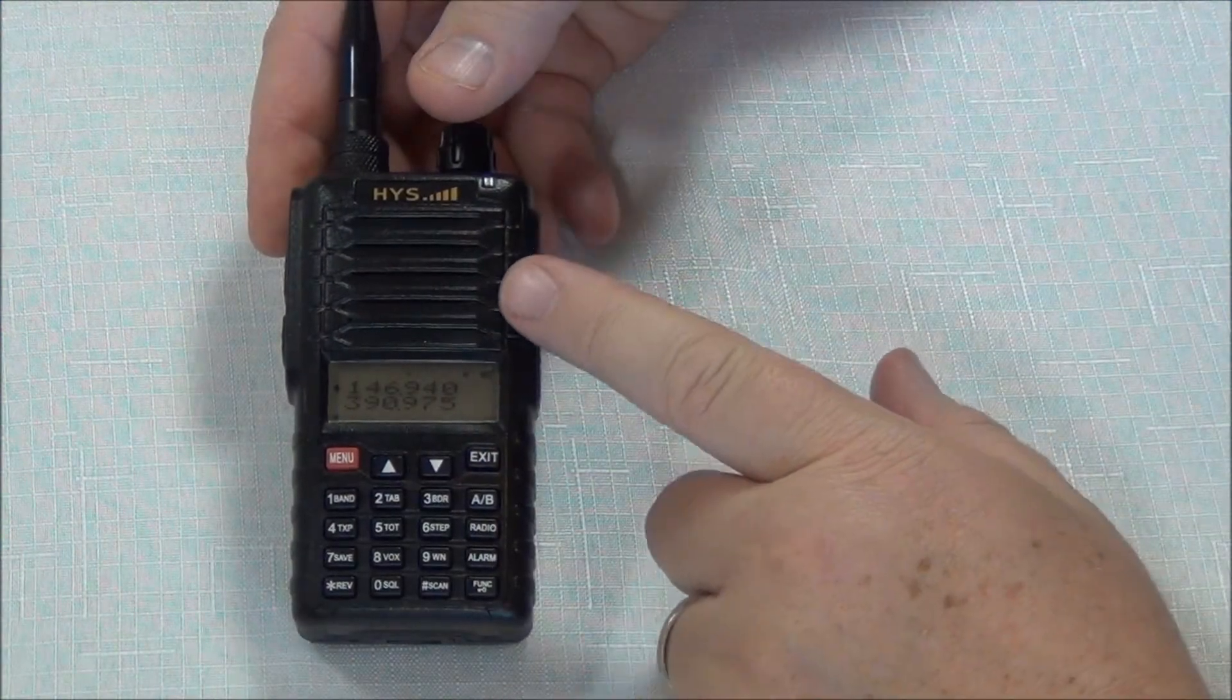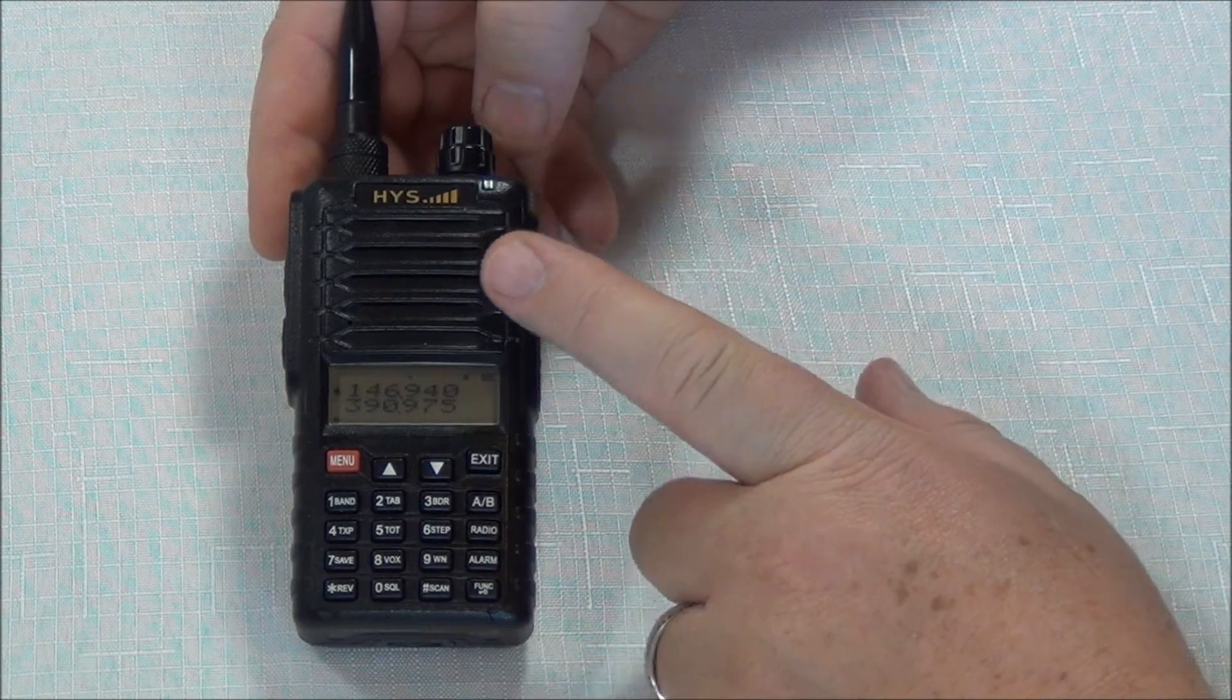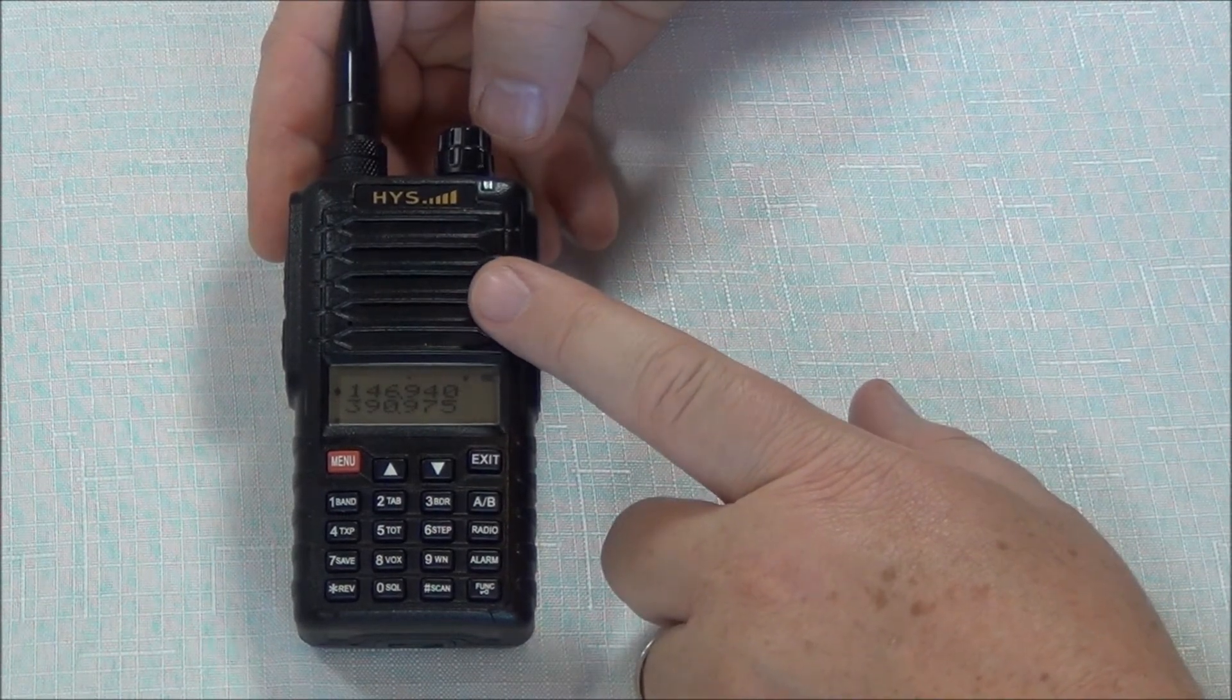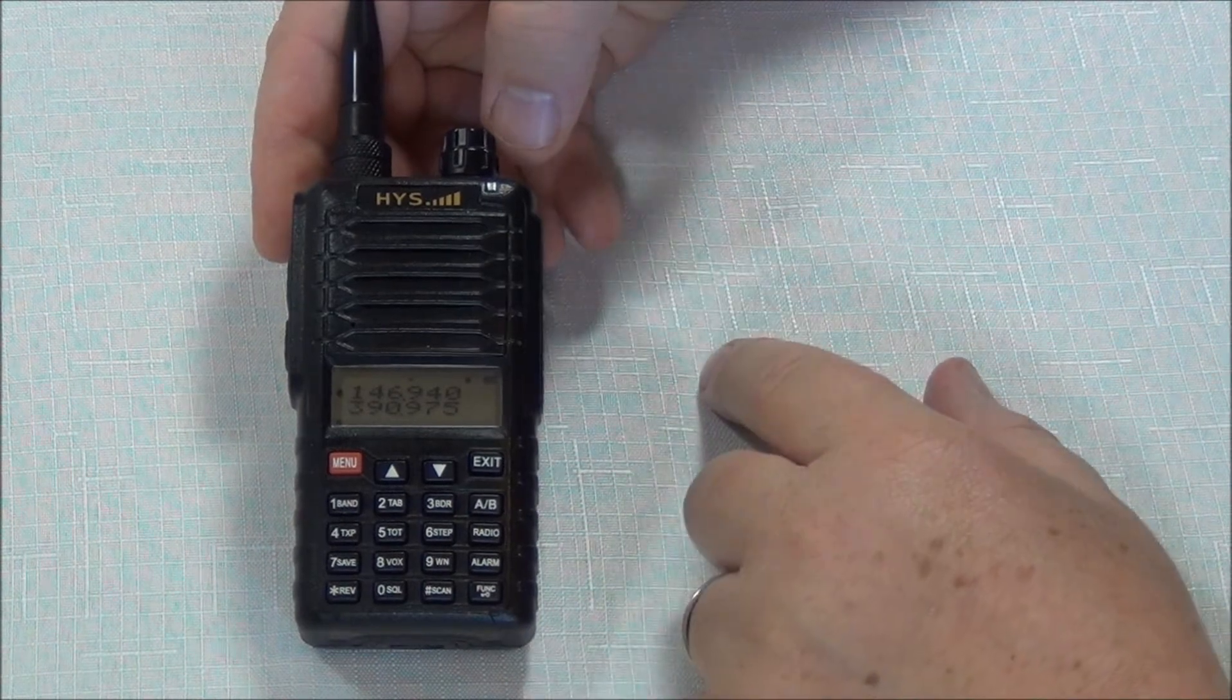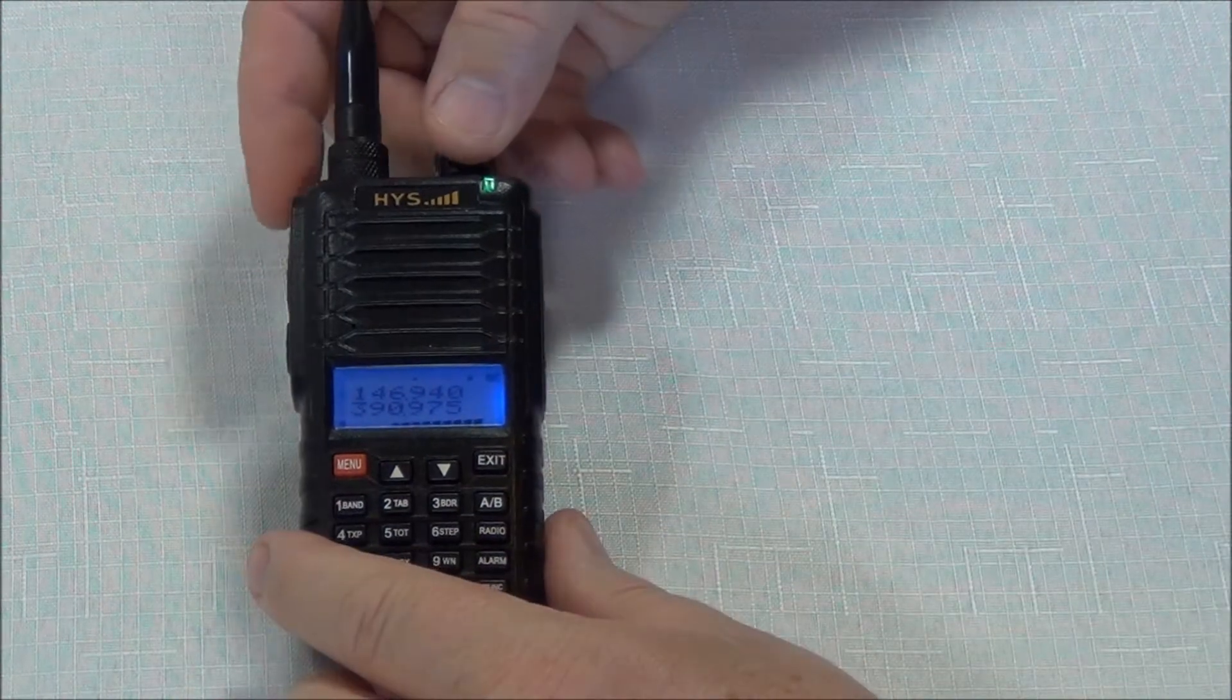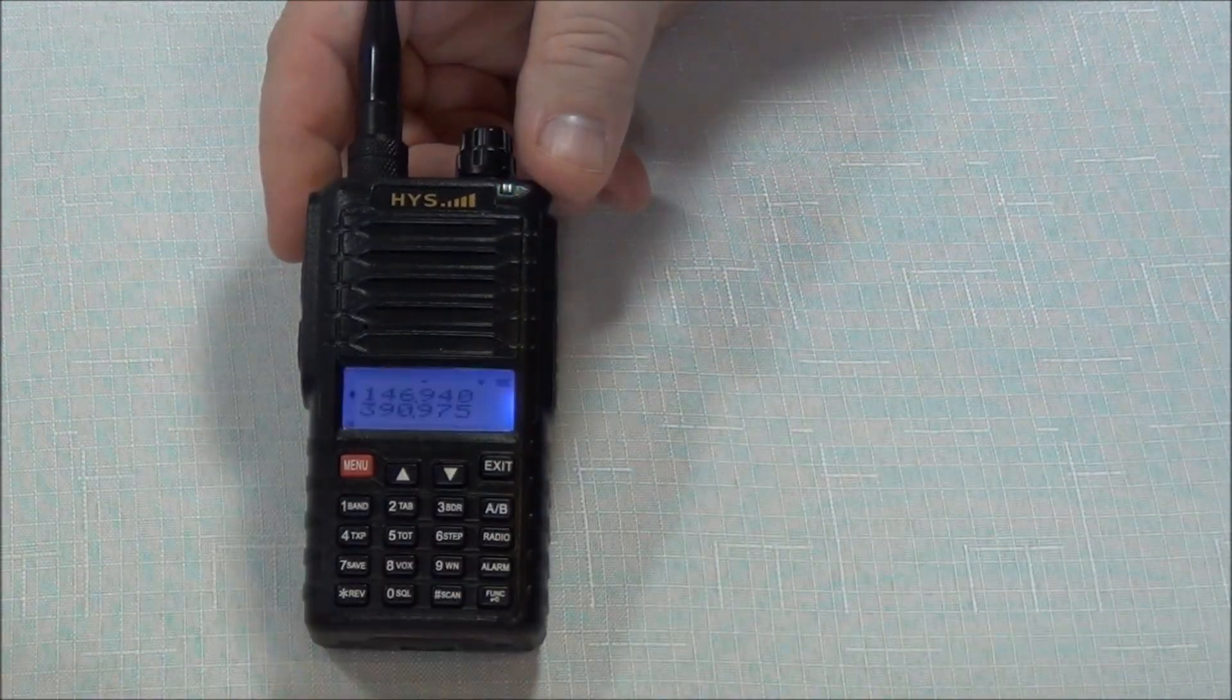Today I want to walk you through setting a repeater into the HYS dual band ham transceiver. This is a 2 meter and 70 centimeter. We've got somebody talking to us right there. Just a little noise, but that's okay. We'll walk through that.